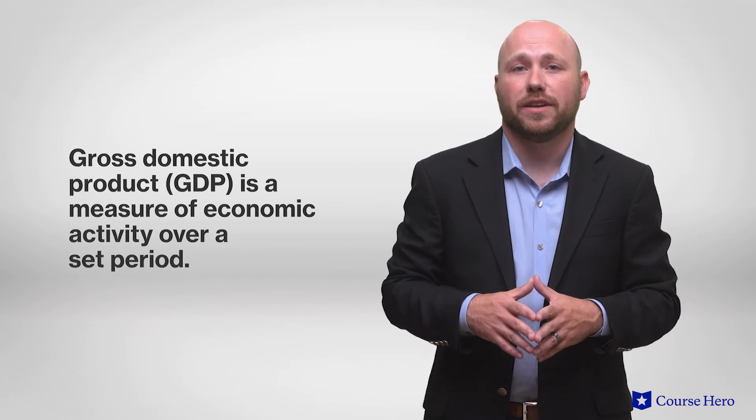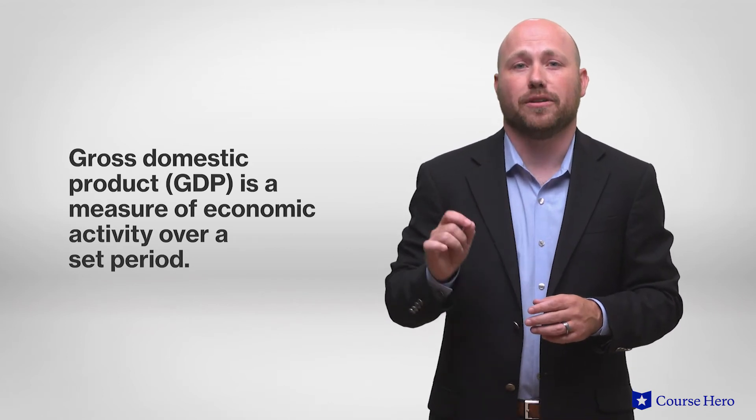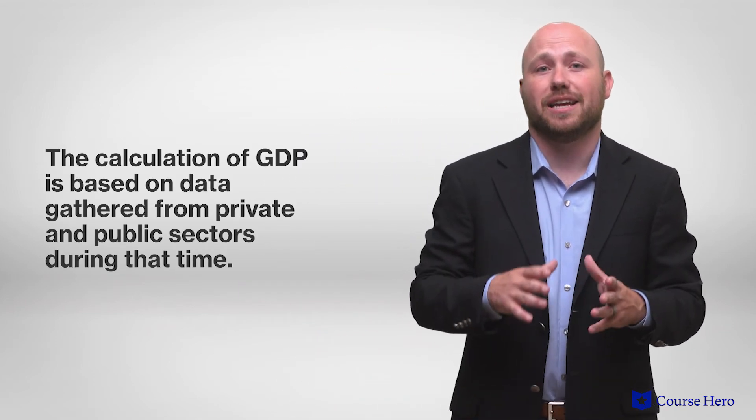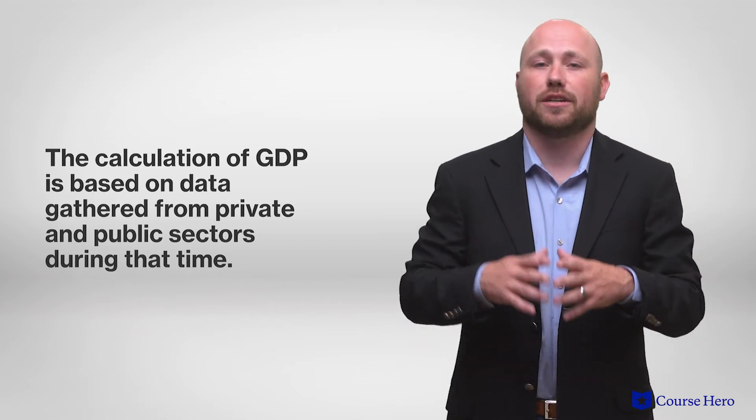GDP is a measure of economic activity over a set period. A unit of time may be chosen. This is typically one year, but GDP can also be calculated at quarterly intervals. Once a designated time period is chosen, the calculation of GDP is then based on data gathered from the private and public sectors during that time. GDP can then provide a snapshot of the economic activity in that specific time period.